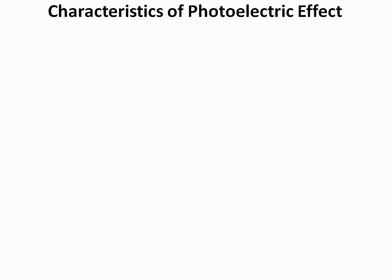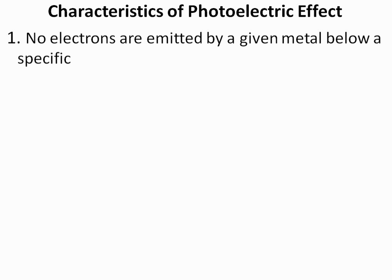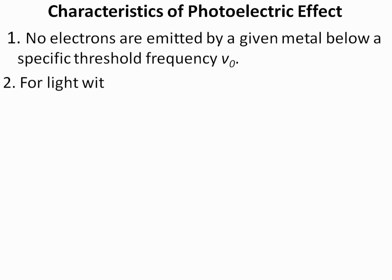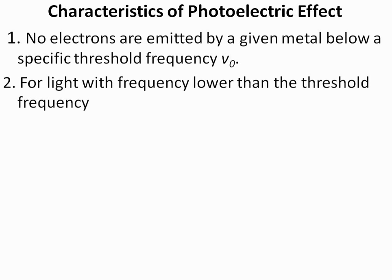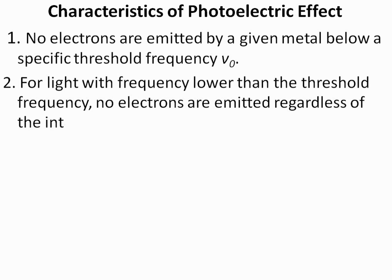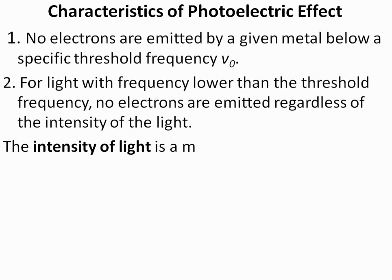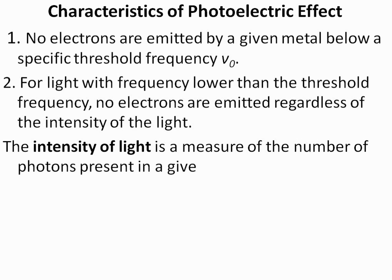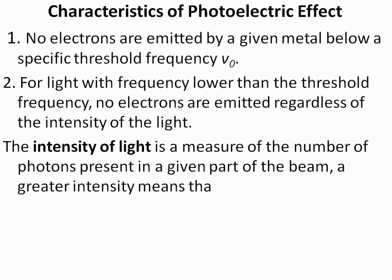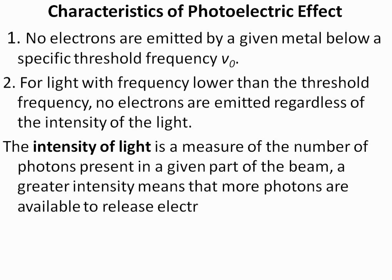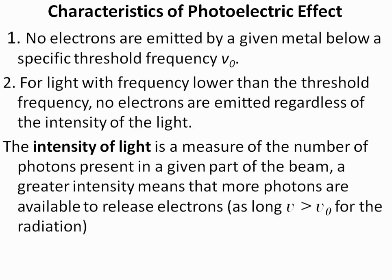Characteristics of the photoelectric effect. First, no electrons are emitted by a given metal below a specific threshold frequency nu naught. Every metal has a threshold frequency required to remove electrons from its surface. For light with frequency lower than the threshold frequency, no electrons are emitted regardless of the intensity of the light. The intensity of light is a measure of the number of photons present in a given part of the beam. Greater intensity means more photons are available to release electrons, as long as nu is greater than nu naught.